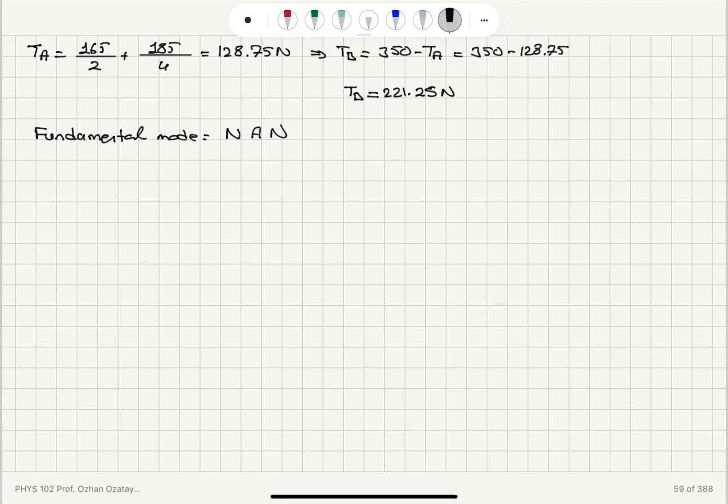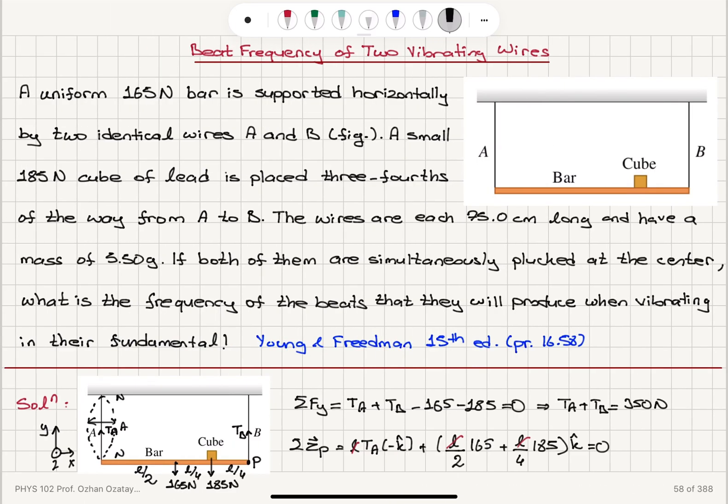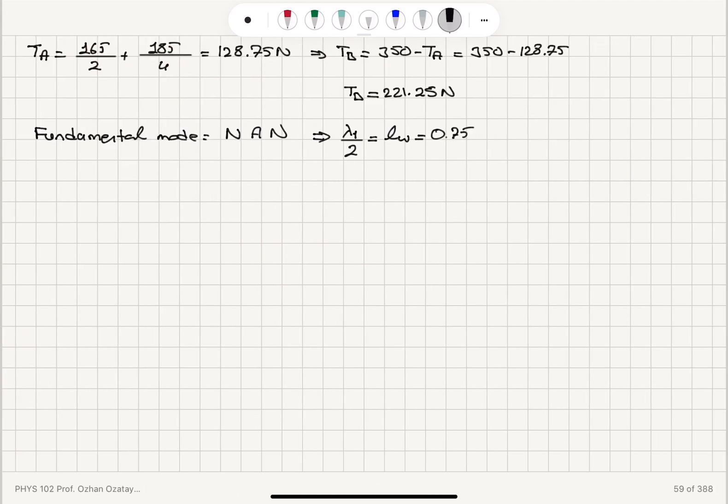So the distance between two consecutive nodes is lambda over 2. So lambda_1 over 2 will be equal to the length of the wire. The length of the wire was given as 0.75 meters. So we can see it's 75 centimeters long each. So this will give us for the wavelength lambda_1, 1.5 meters.